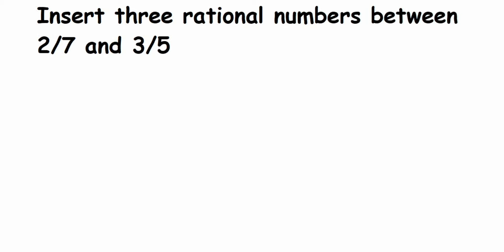Hey everyone, here's a question from rational numbers asked by Ananti. This is a really important type of question that can come for three or four marks. The question is: insert three rational numbers between 2/7 and 3/5. So we need to find rational numbers between these two rational numbers, 2/7 and 3/5.